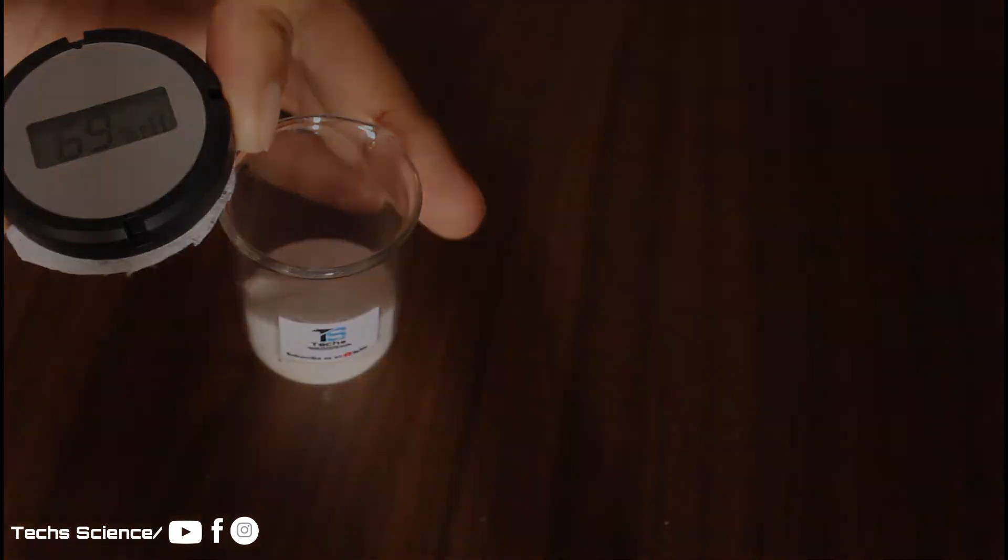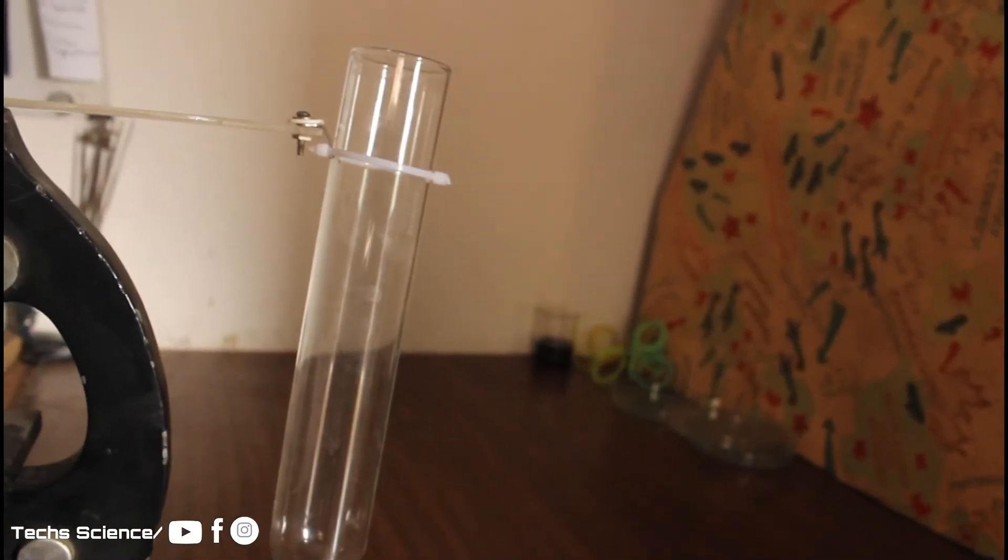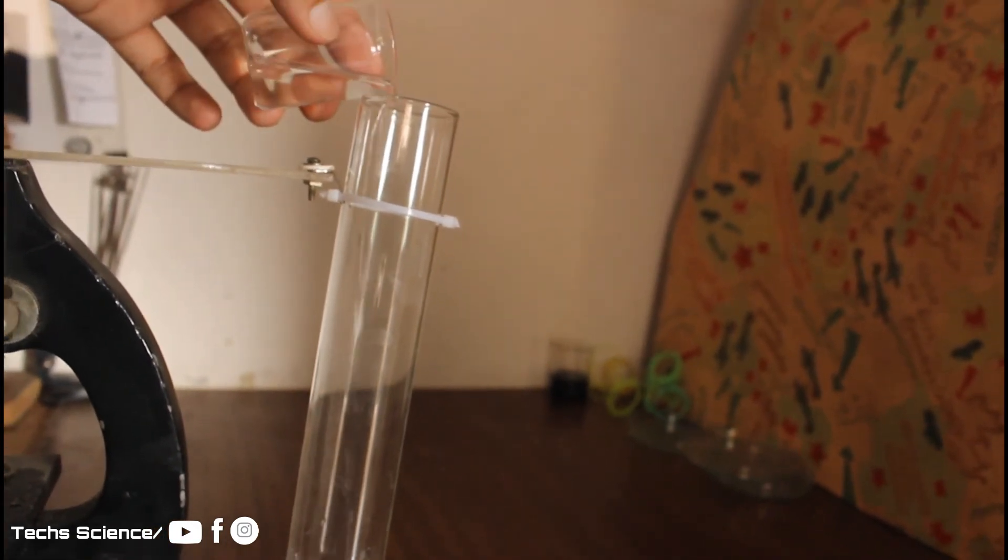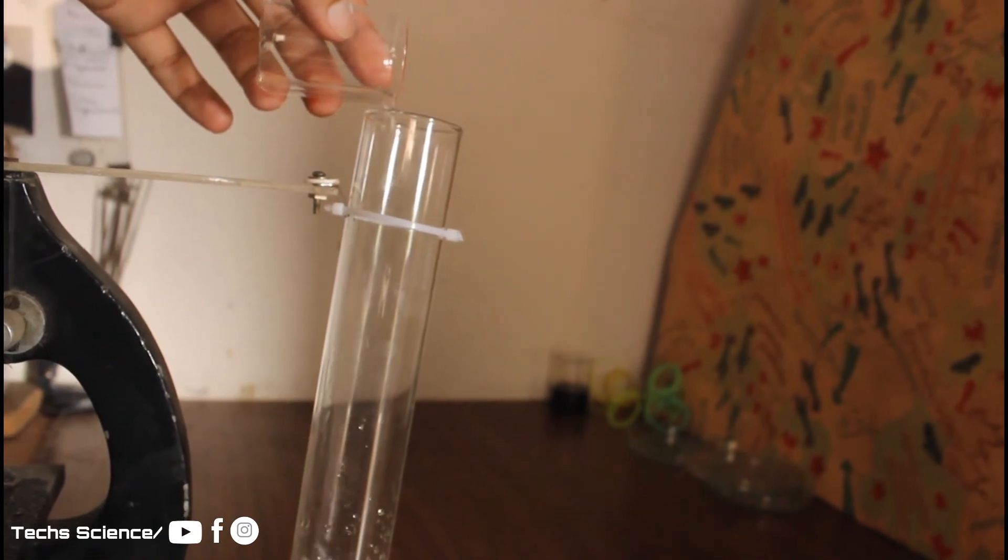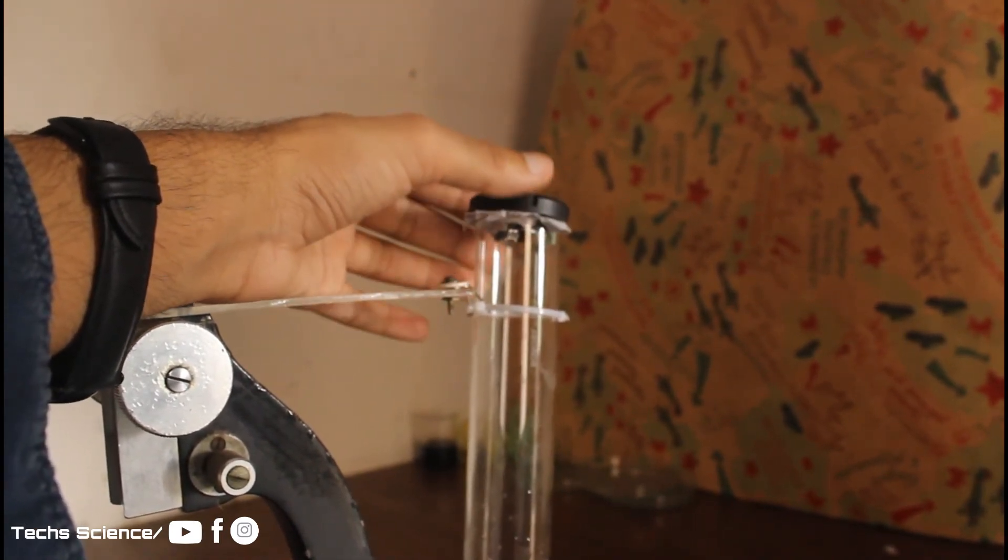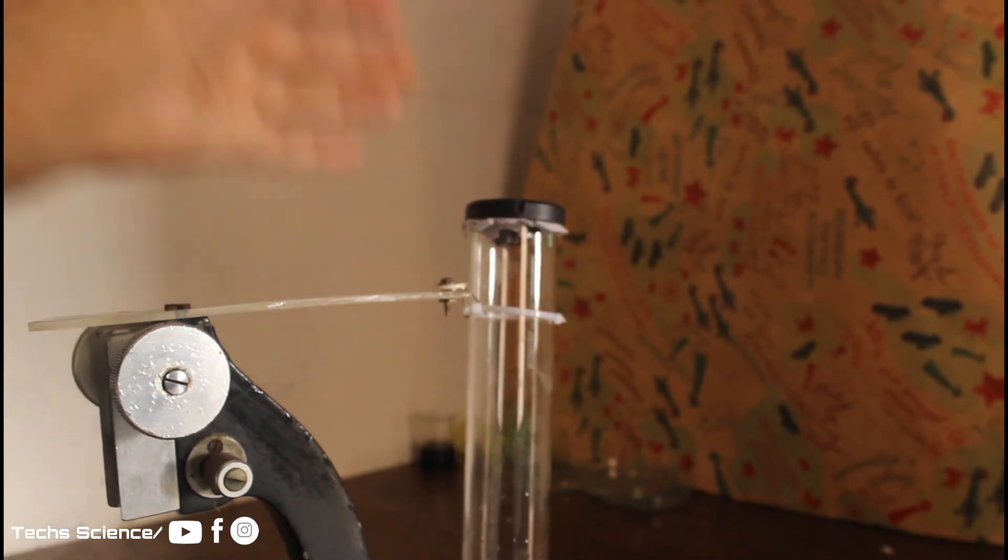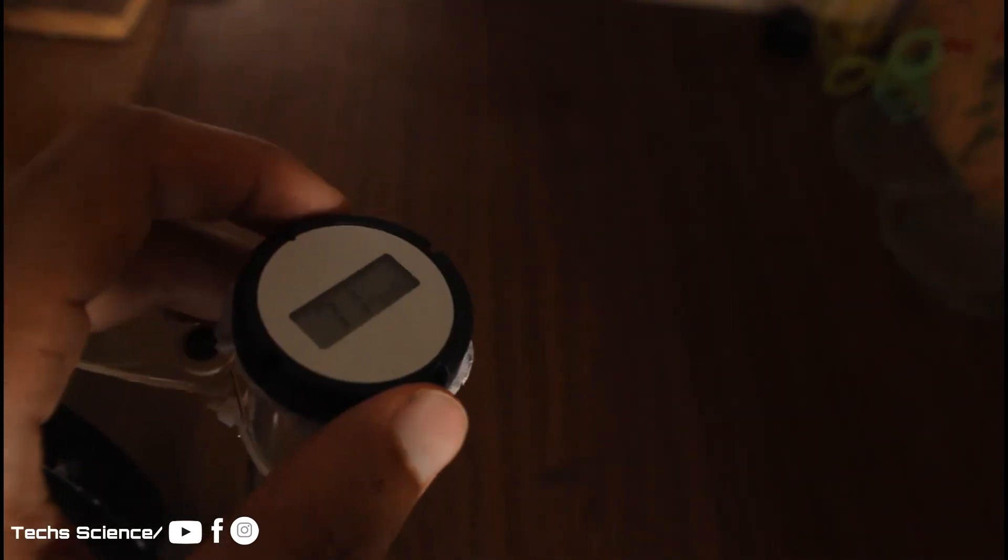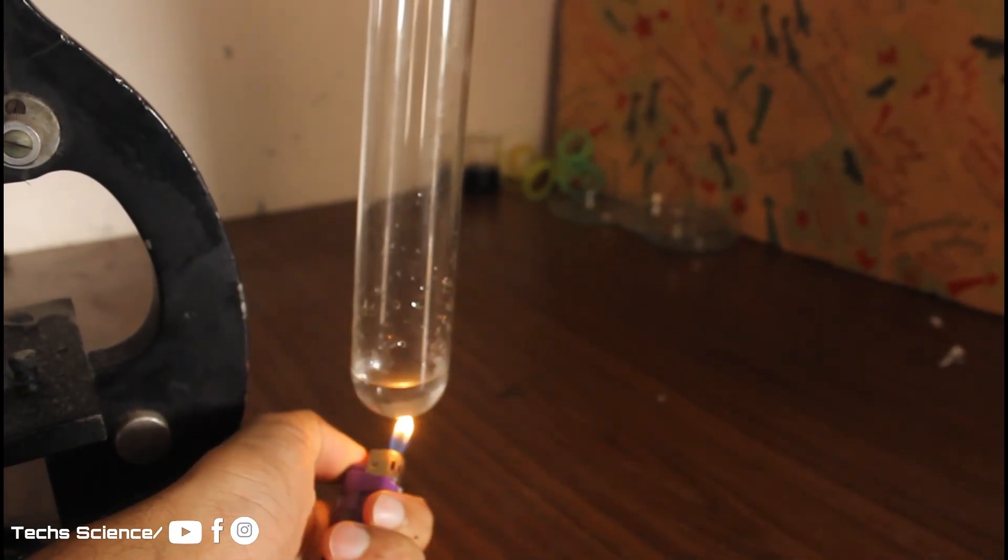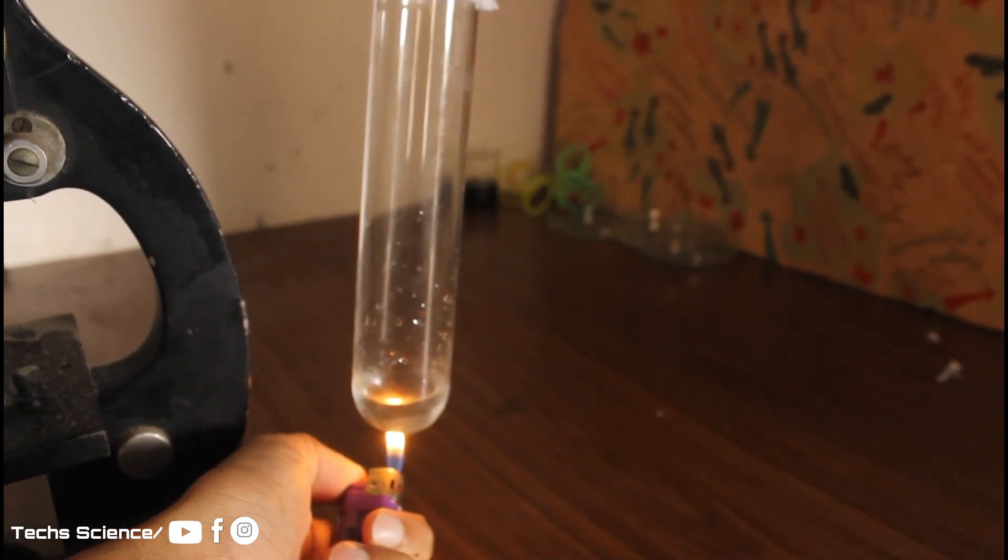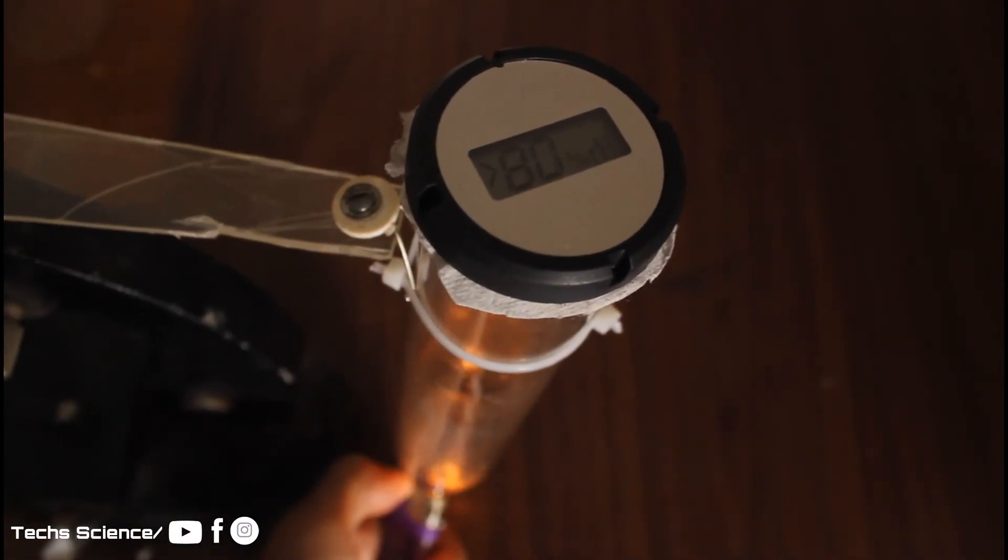Now I will experiment to see the effect of heat and cold on humidity. I will put some water in this test tube and heat it from below. Initially the humidity is 71%. Let's see what happens when we heat. Within five minutes the humidity rose to 80%.